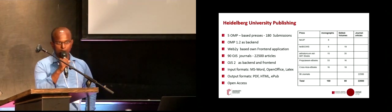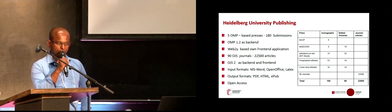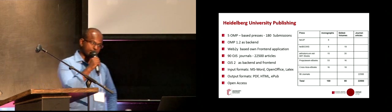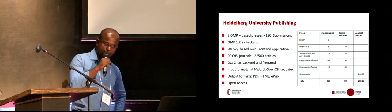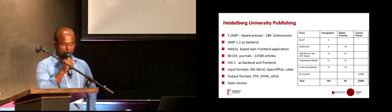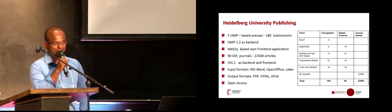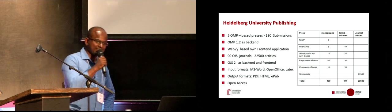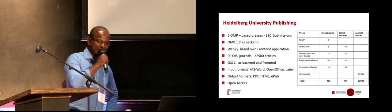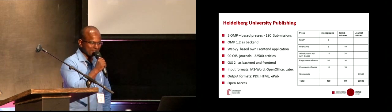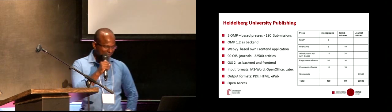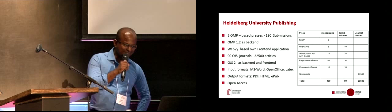To round up, we have 90 OJS channels, all OJS 2-based, and 22,500 articles. Maybe we are the 10th largest open access publisher in the world when we compare these things.